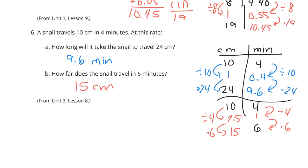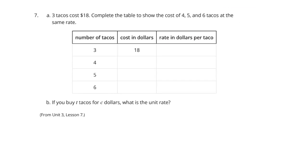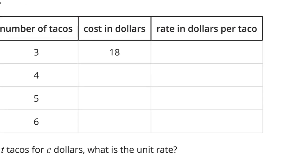Continuing on. 3 tacos cost $18. Complete the table to show the cost of 4, 5, and 6 tacos at the same rate. Well, let me come up here to, oh, actually, it does say right here, I'm sorry, rate in dollars per taco. Dollars per taco. Dollars per taco. Dollars, 18, per taco. 3. 18 divided by 3 is 6. This rate's not going to change. This is going to be $6 a taco.